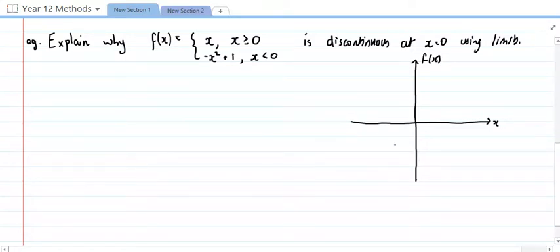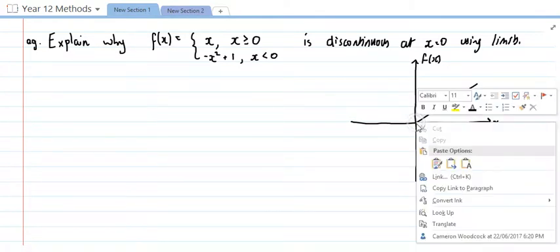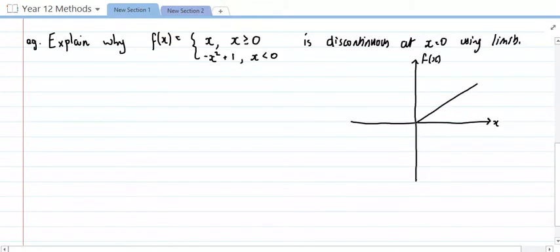So f of x equals x. Well, that's just a straight line going through the origin. Should make a 45 degree angle. I was pretty close. But that's it there. And that's where x is greater than 0. So I'm going to draw a closed circle there. Or I'm going to attempt to draw a closed circle at least. Okay. And then, it's a closed circle because it's greater than or equal to.